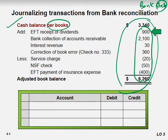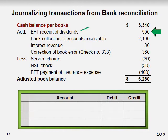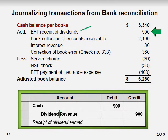This is the cash book side of the bank reconciliation statement. First, we received a dividend, so we have to record it. The entry would be: Cash 900 to Dividend Revenue 900. You may write 'Dividend Revenue' so you understand this is a cash inflow to our business. Revenue increases are credited, and cash increases (an asset) are debited. The description is: receipt of dividend revenue.